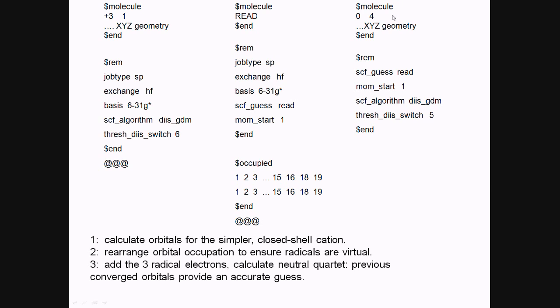In the third calculation, we calculate the neutral quartet with a guess from the previous orbitals. And here, those three electrons, those three additional electrons, will fall into the unoccupied orbitals, and hopefully will fall into the radical ones, which should be the lowest three unoccupied ones in energy. And this will give us our final solution from these three jobs.